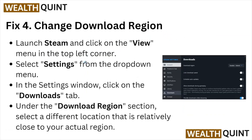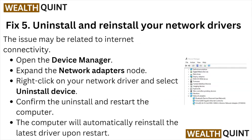Fix number four: change the download region. Launch Steam and click on the View menu in the top left corner. Select Settings from the drop-down menu. In the Settings window, click on the Downloads tab. Under the Download Region section, select a different location that is relatively close to your actual region.